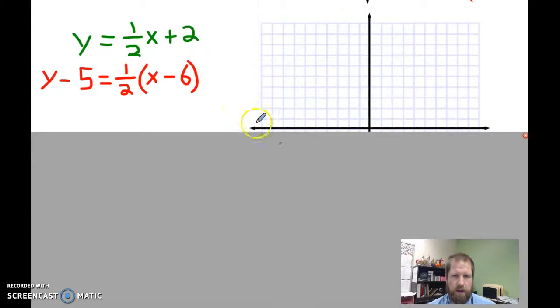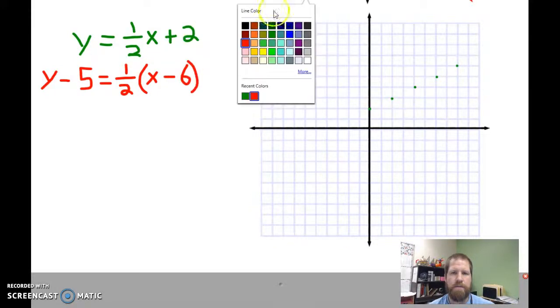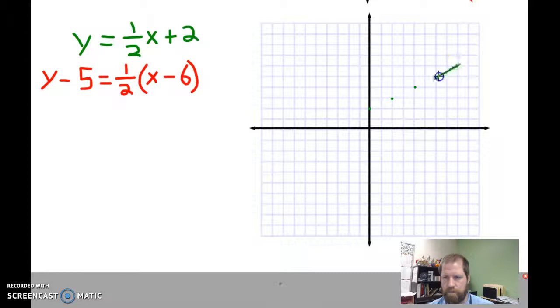Alright, last one. We've got another equation in slope-intercept form, and one in point-slope form. Let's start with this one - positive 2, and then 1/2 x. So I'd go up 1 and over 2, up 1 over 2, up 1 over 2. I can draw my line.